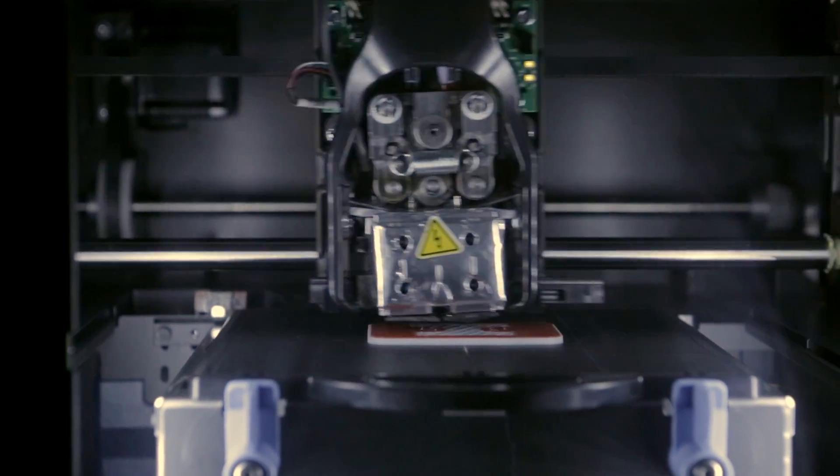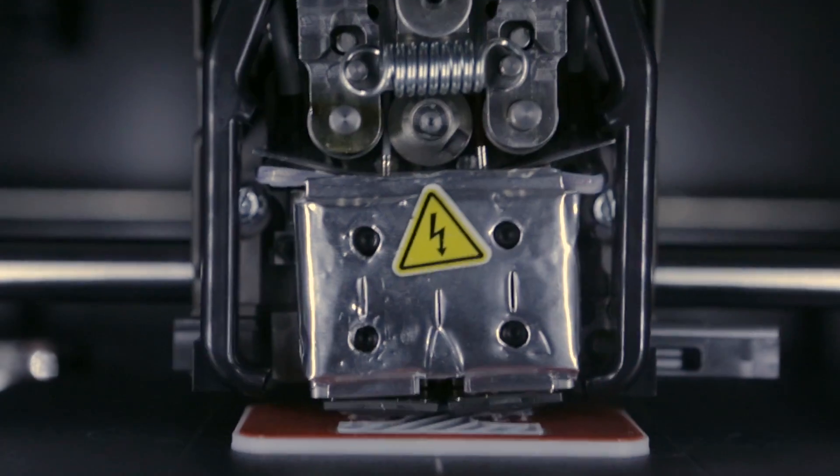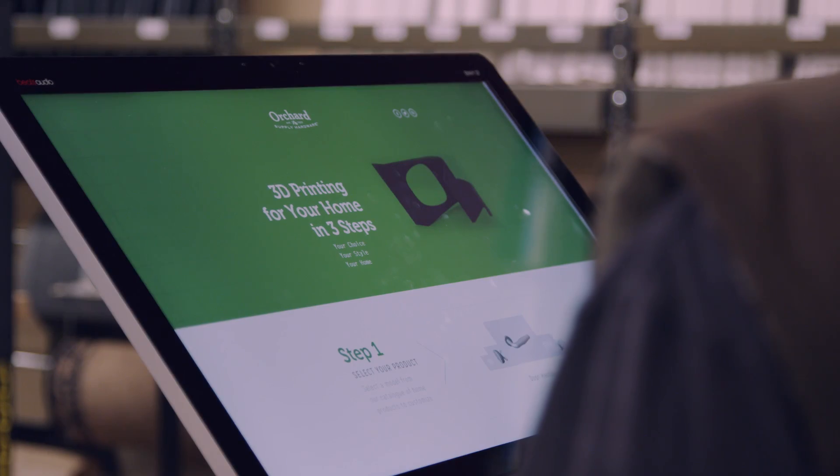3D printing is a manufacturing revolution. You can push a button on your computer and get a physical object. We're introducing 3D printing and scanning in an Orchard Supply Hardware store here in the Bay Area. It's the real DIY.